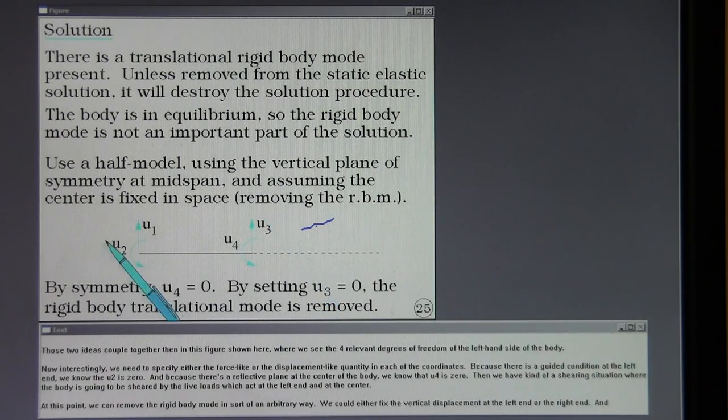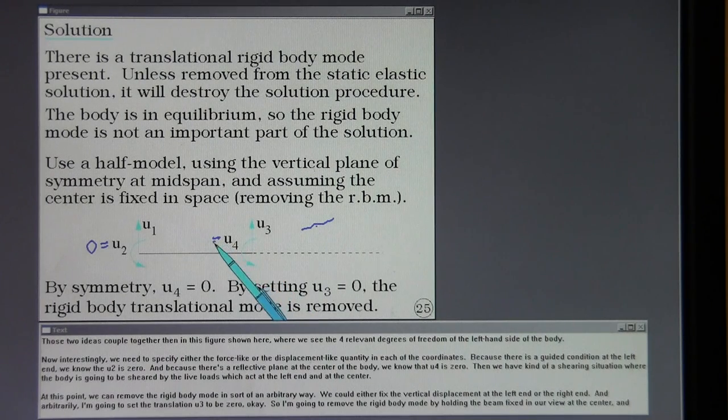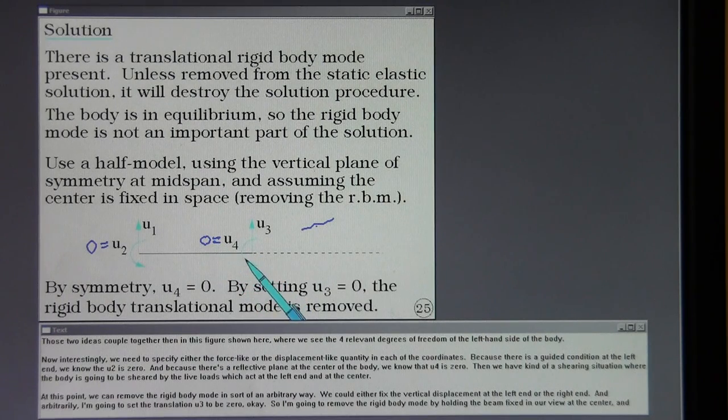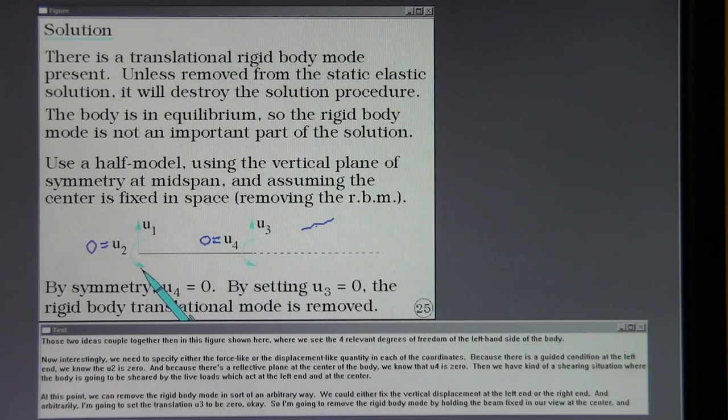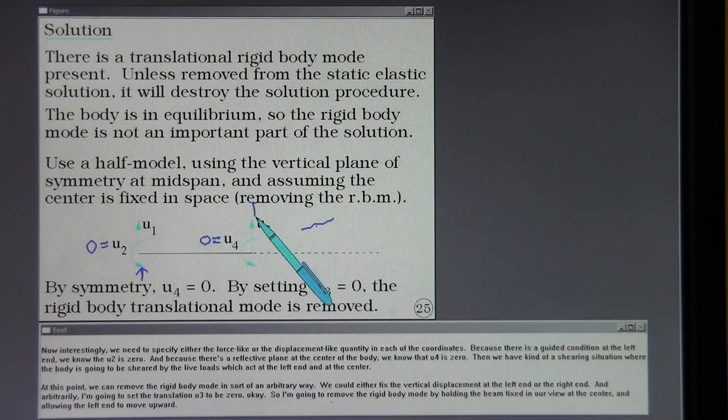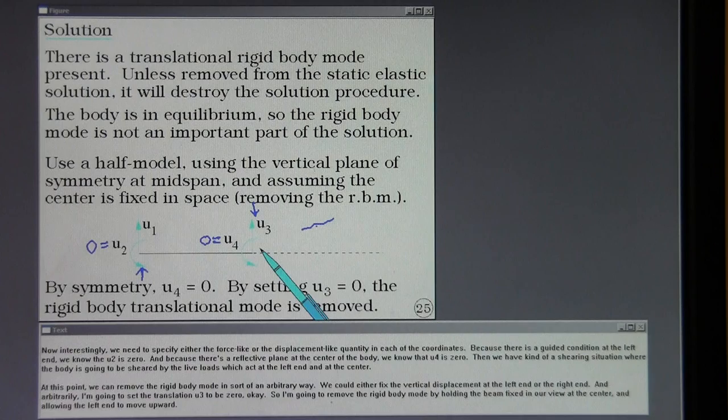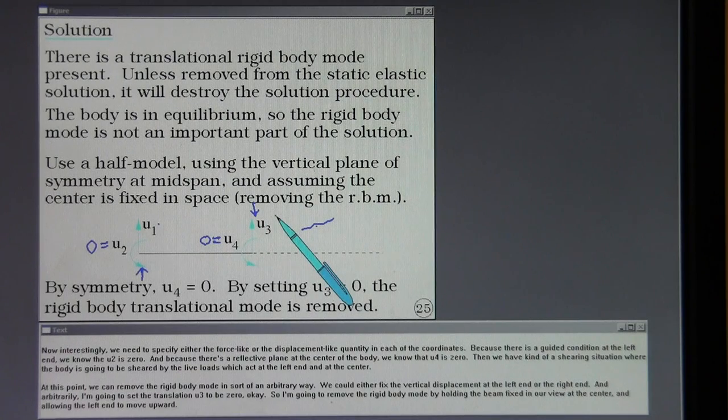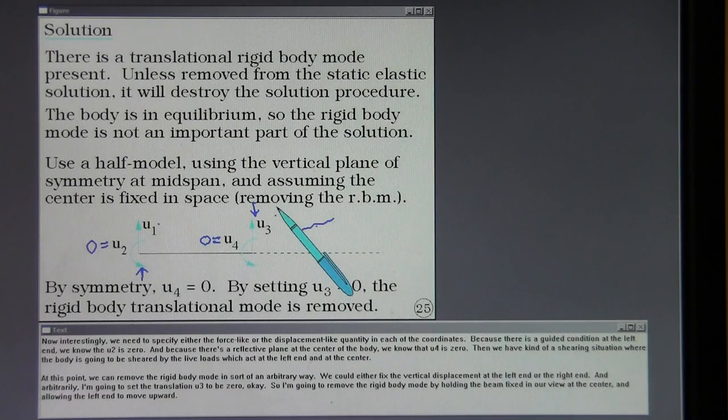Because there is a guided condition at the left end, we know that U2 is zero. And because there's a reflective plane at the center of the body, we know that U4 is zero. Then we have kind of a shearing situation where the body is going to be sheared by the live loads which act at the left end and at the center. At this point we can remove the rigid body mode in sort of an arbitrary way. We could either fix the vertical displacement at the left end or the right end. And arbitrarily I'm going to set the translation U3 to be zero.